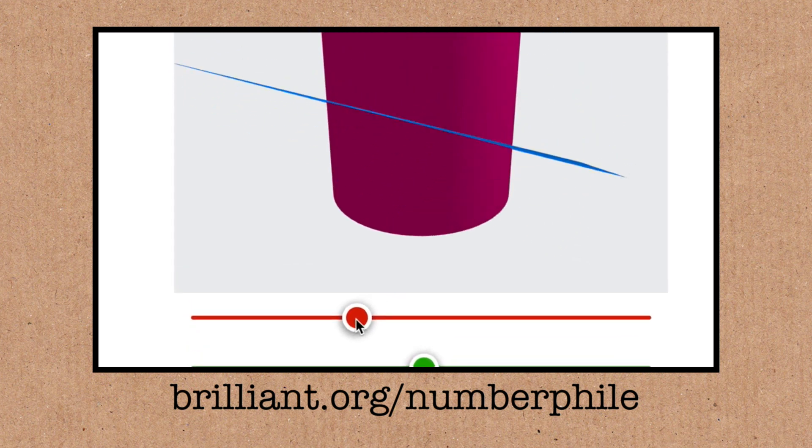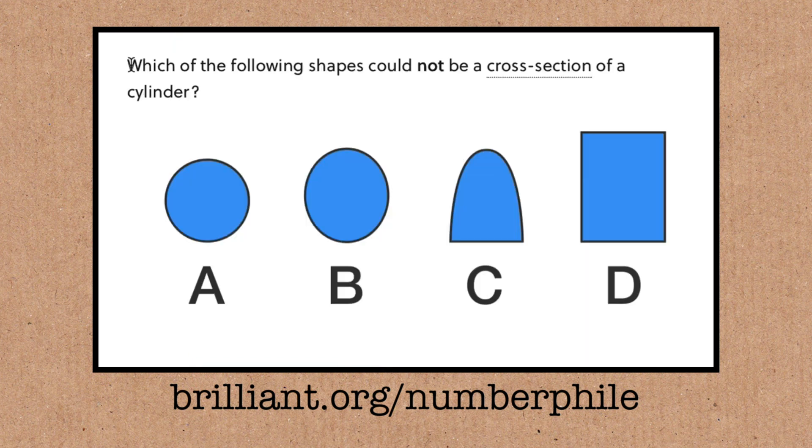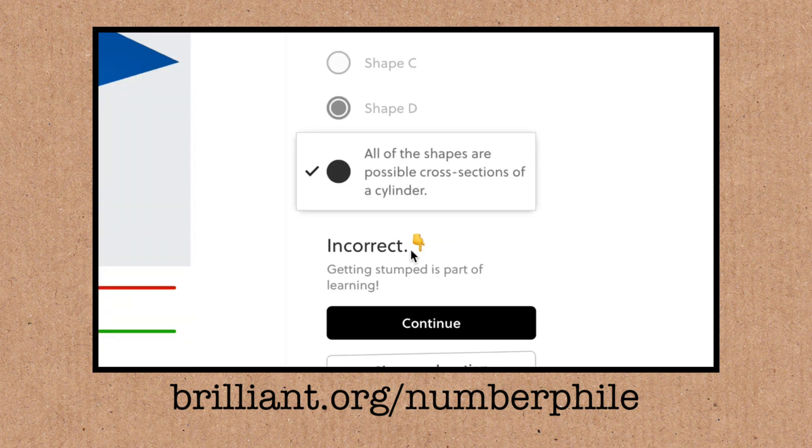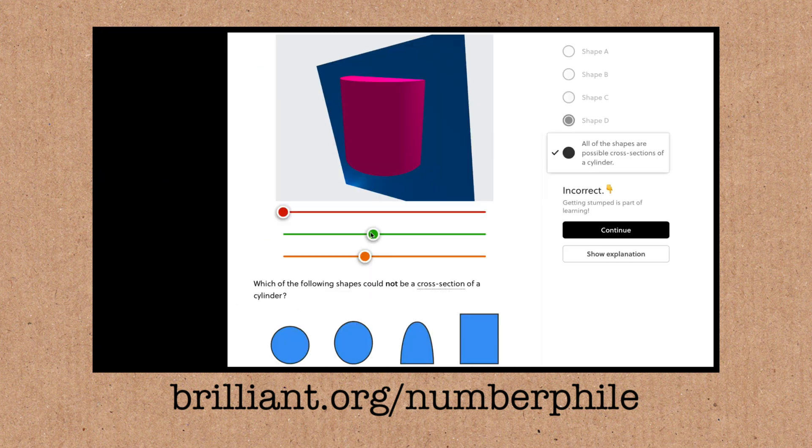They're going really big on the interaction now. Which of the following shapes could not be a cross section of the cylinder. Oh it's got to be D surely. Is it? Oh again! Oh yeah I see I could have like put it up there.